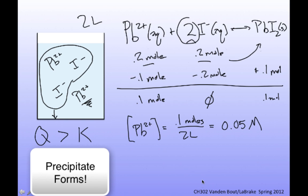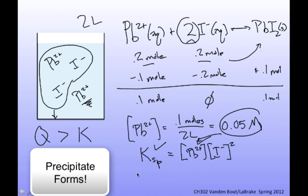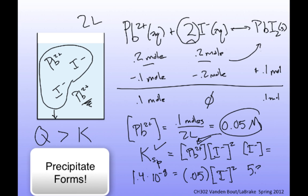From the lead concentration, I can find the iodide concentration using K_sp equal to the lead concentration times the iodide concentration squared. Plugging in: 1.4 × 10⁻⁸ equals 0.05 times the iodide concentration squared. Solving, I find that the iodide concentration equals 5.3 × 10⁻⁴ molar.